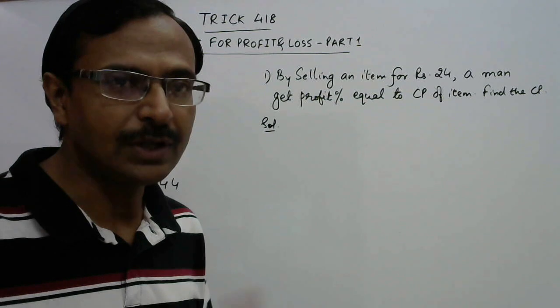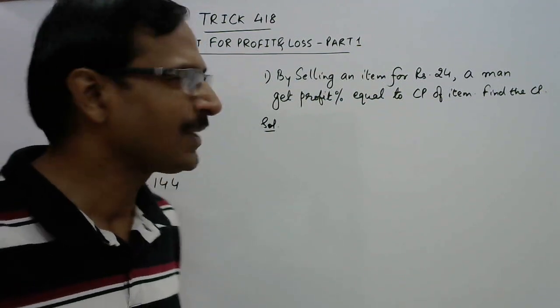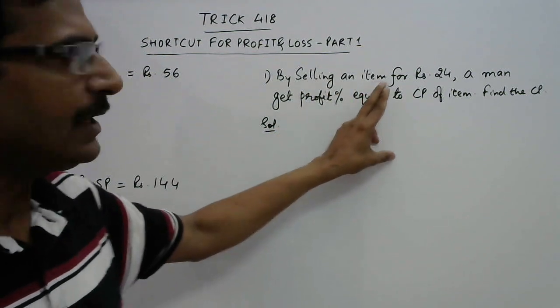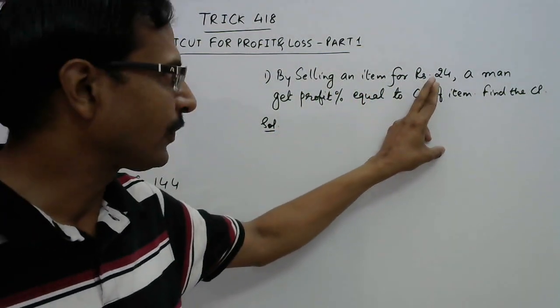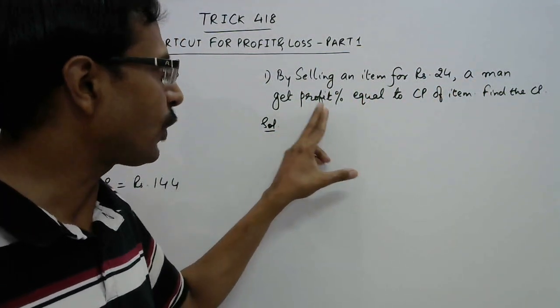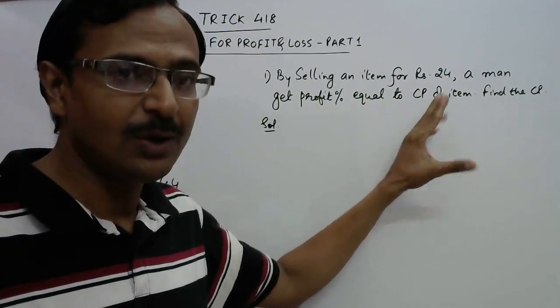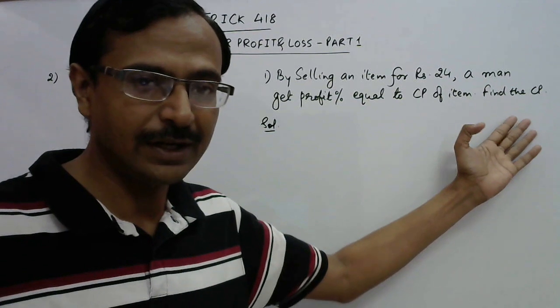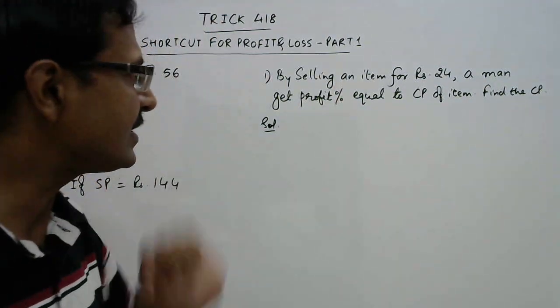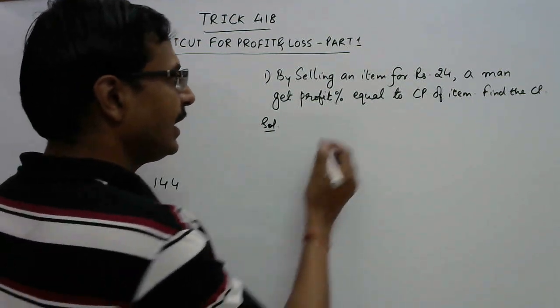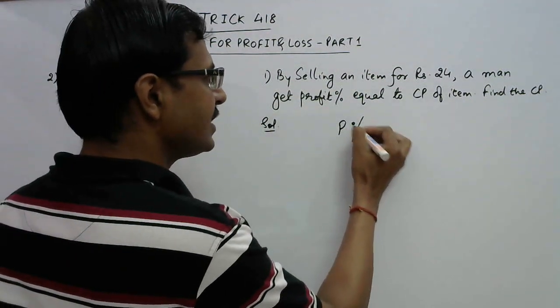The question goes like this: by selling an item for rupees 24, a man gets profit percent equal to cost price of the item. We need to find the cost price. So selling price is given and the condition which is given is that the profit percent is numerically equal to the cost price.